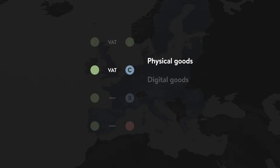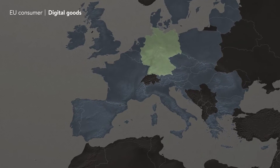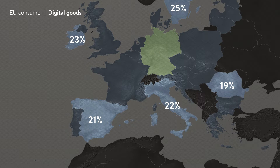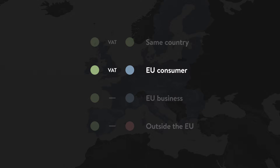Now let's look at digital goods. When selling digital goods to customers in the European Union, you charge the VAT rate of the customer's country. So if your store is based in Germany and a customer from Spain buys a digital product from you, they should be charged the Spanish VAT rate. Therefore, you'll be charging different VAT rates all around Europe based on the countries your customers come from. Now that we've gone over the VAT rates for EU consumers, let's look at businesses from other EU countries.